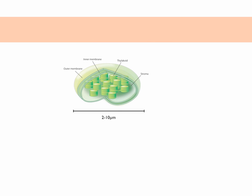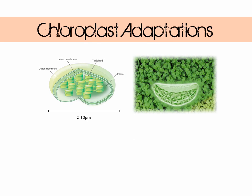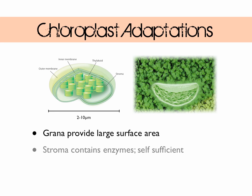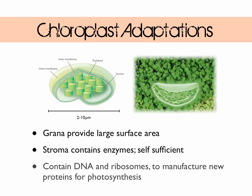So how do these structures aid the function of the chloroplast? The grana provide a large surface area meaning that the maximum amount of light can be captured. The stroma contains all of the enzymes necessary for the second stage of photosynthesis, and also DNA and ribosomes so they can manufacture new proteins. This means that the chloroplast is almost entirely self-sufficient.